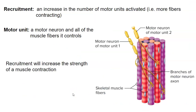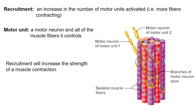Now lastly, we have recruitment. Recruitment is an increase in the number of motor units that are activated — simply that more fibers are contracting. When we say a motor unit, what we mean is a motor neuron and all of the muscle fibers it controls. So for example, here we have a bundle of muscle fibers. Here is one motor neuron, and it looks like it's innervating only the purple muscle fibers. And here's a second motor neuron, innervating only the red muscle fibers.